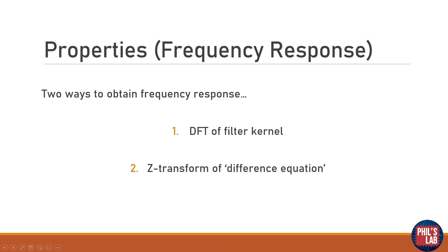Now let's have a look at the properties of a moving average filter, in particular the frequency response. There are two ways to obtain the frequency response. First of all we could just take a discrete Fourier transform of the filter kernel, but let's look at how to do that by doing a Z-transform of the difference equation.